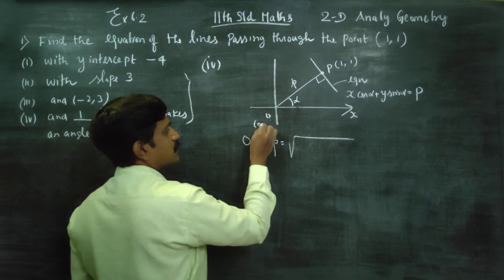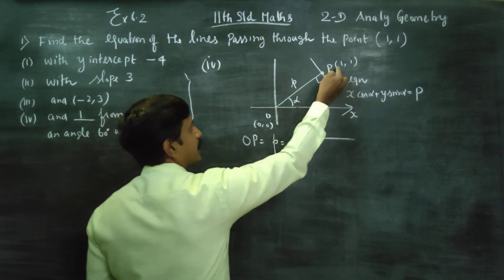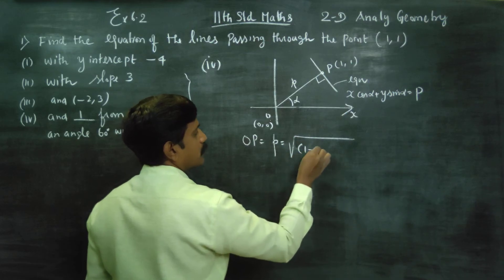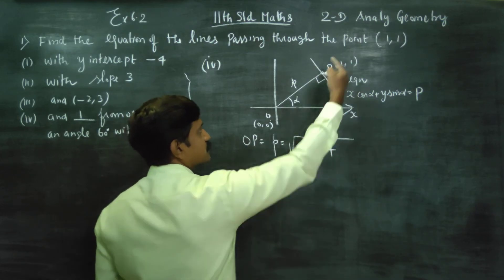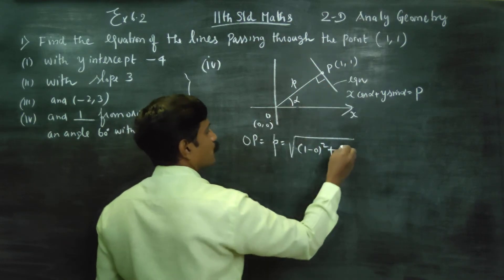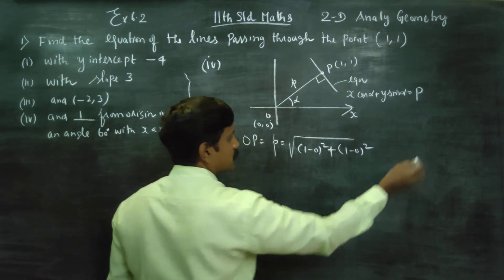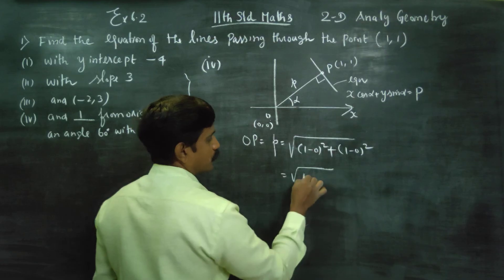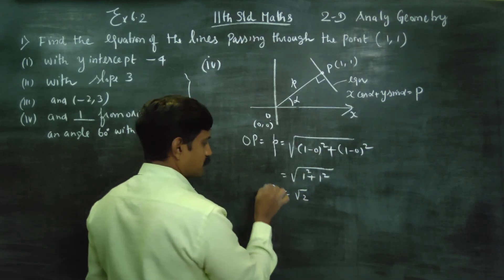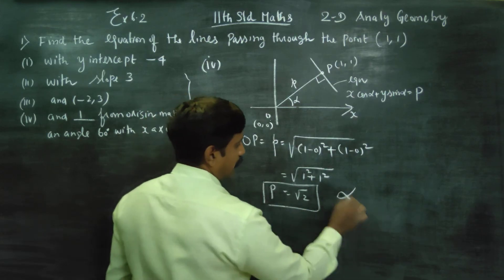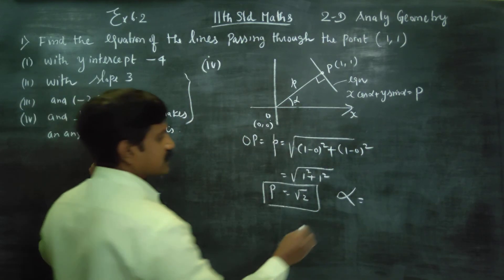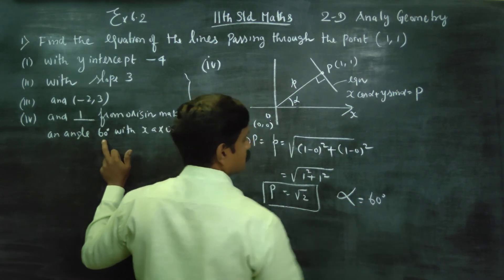Distance formula: √[(x₂ − x₁)² + (y₂ − y₁)²] = √[(1 − 0)² + (1 − 0)²] = √(1 + 1) = √2. So p = √2. The perpendicular makes 60 degrees with the x-axis, therefore α = 60°.